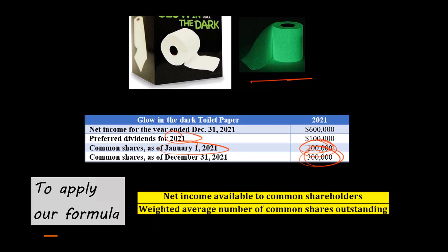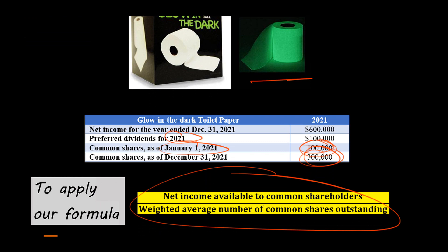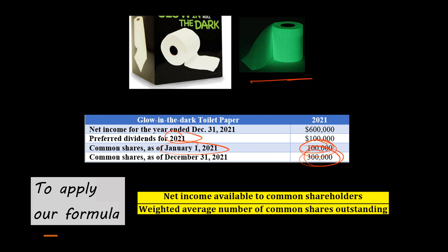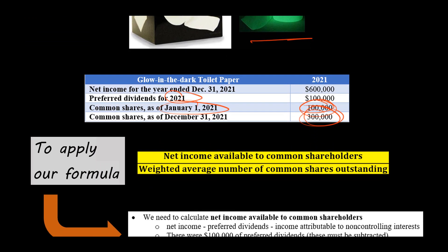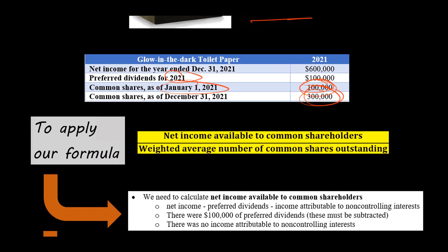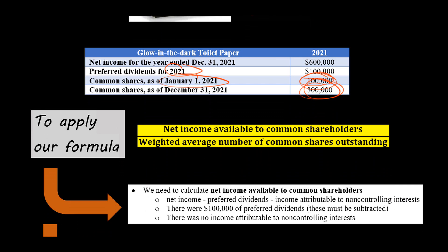Here's our formula again: net income available to common shareholders divided by the weighted average number of common shares. For the numerator, this is pretty simple — we take the $600,000 of net income and subtract the preferred dividends of $100,000.